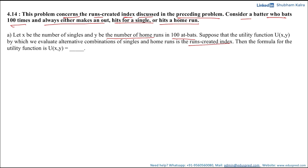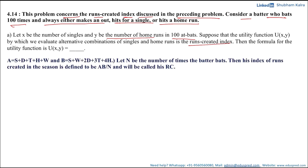From the preceding problem, we know that A equals s plus d plus t plus h plus w, and B equals s plus w plus 2d plus 3t plus 4h, where s was singles, d was doubles, t was triples, h was home runs, and n is the number of times the batter bats.